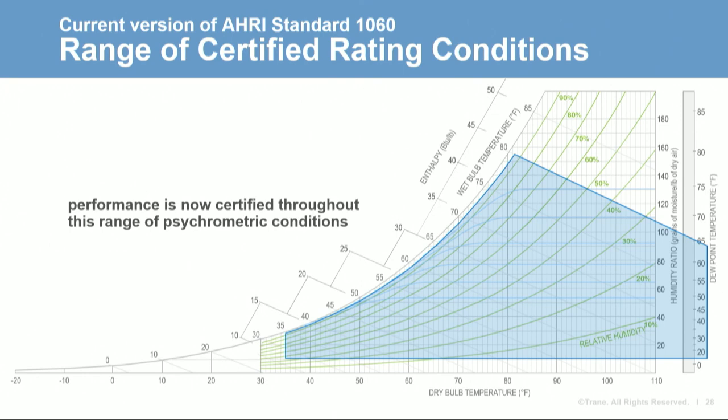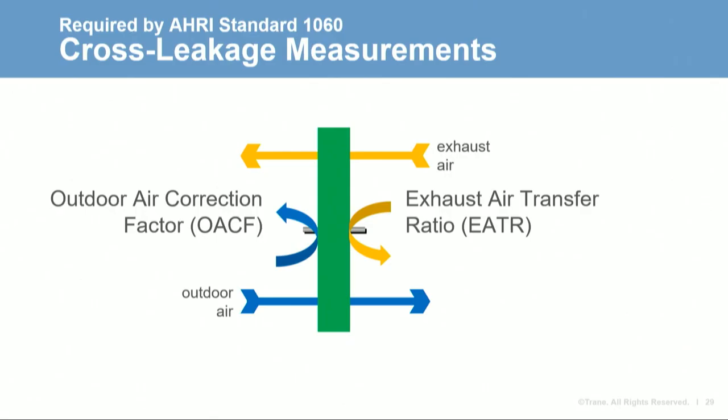In addition to effectiveness and air pressure drop, the AHRI rating standard also requires measurement of cross leakage — air that leaks through the device from one airstream to the other. For some applications, leakage of exhaust air into the entering outdoor airstream could be dangerous, so it needs to be avoided altogether. But for the vast majority of applications, cross leakage is not problematic as long as it's not excessive.